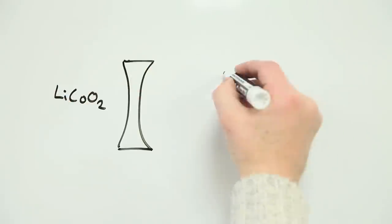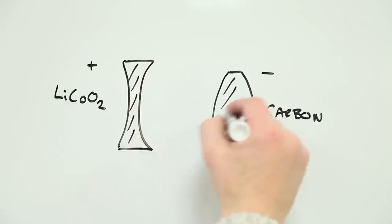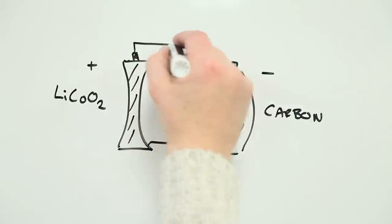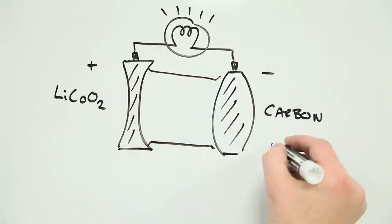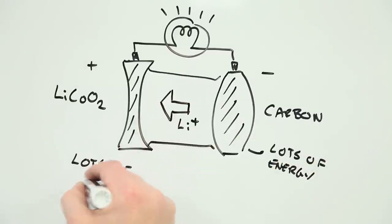The battery can store a lot of energy because you can squeeze a lot of lithium ions, which are relatively small, inside the carbon electrode. And because the ions can move easily between the electrodes, the energy can be extracted fast, which means lots of power.